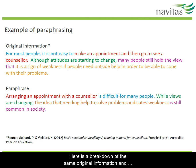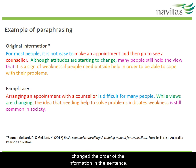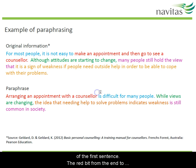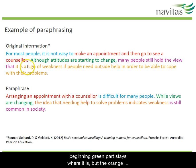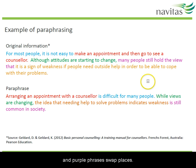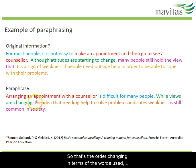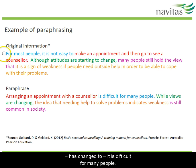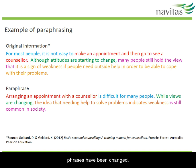Here's a breakdown of the original information and the paraphrase. You can see how the order of information in the sentence has changed: the blue part has moved from the beginning to the end of the first sentence, and the red part from the end to the beginning. In the second sentence, the green part stays where it is, but the orange and purple phrases swap places. In terms of words, 'it is not easy to make' has changed to 'it is difficult for many people.' Pause the recording to have a good look at how the other phrases have been changed.